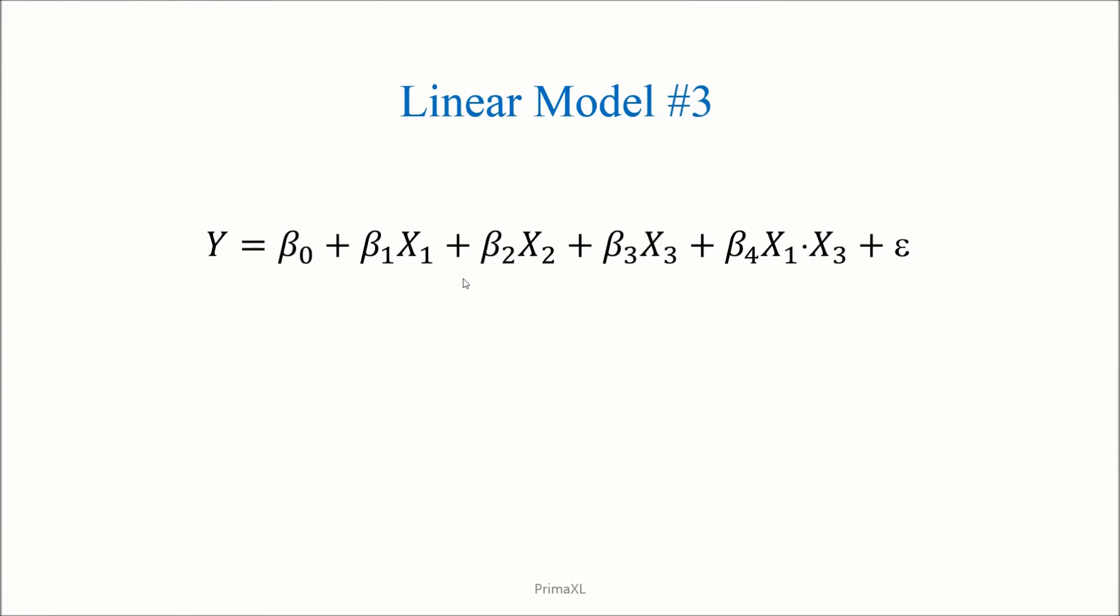Again, we increase the model complexity. We still have three independent variables, x1, x2, and x3. However, there is one more term that is x1 times x3. This term is called the interaction term. x1, x2, and x3 are the same as in the previous model. But the last term is AM times WT. As the AM variable is 0 for the automatic transmission and 1 for the manual transmission, the beta4 can be interpreted as the additional impact of the weight for the MPG of the manual type.